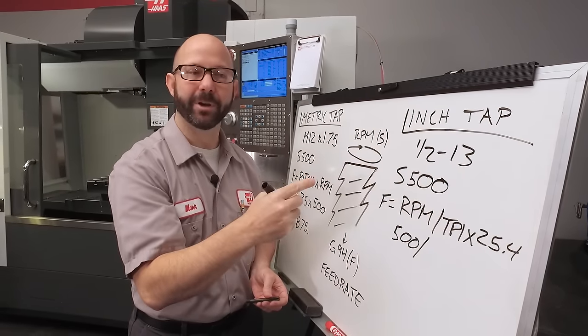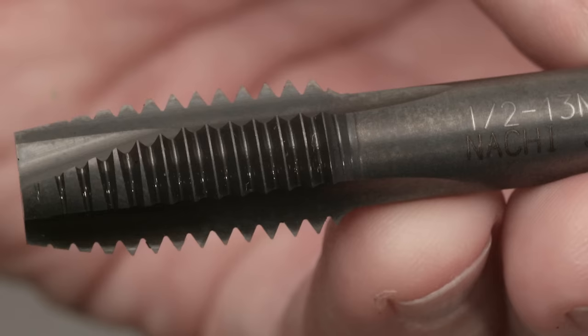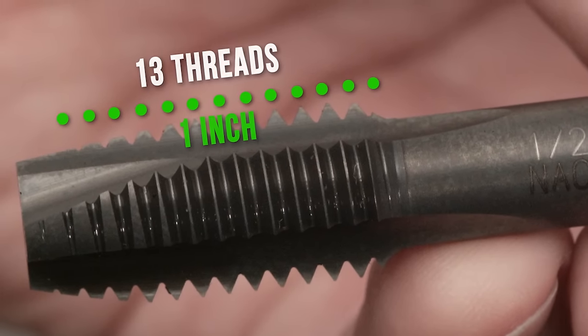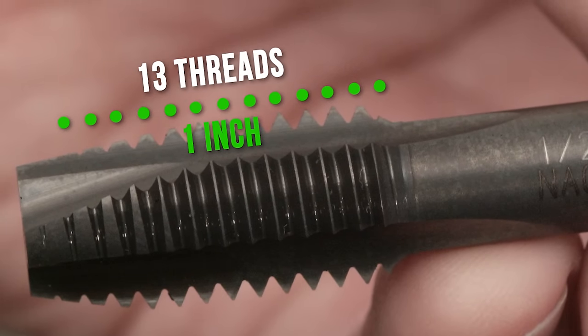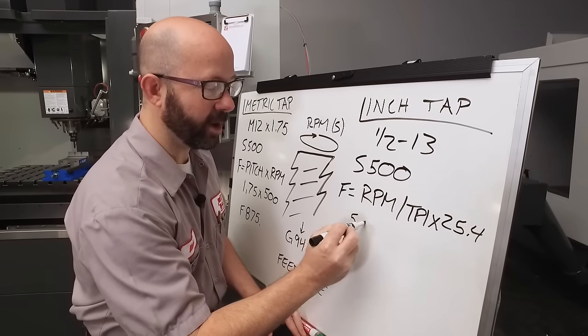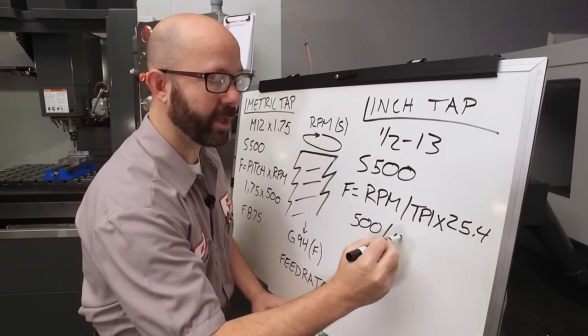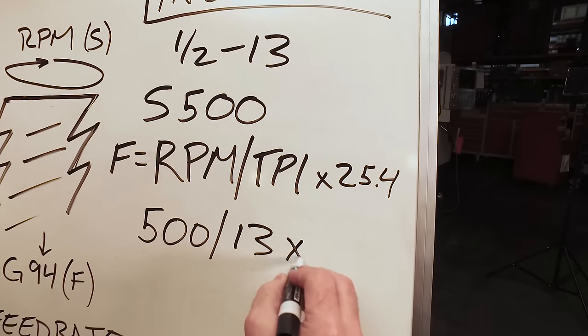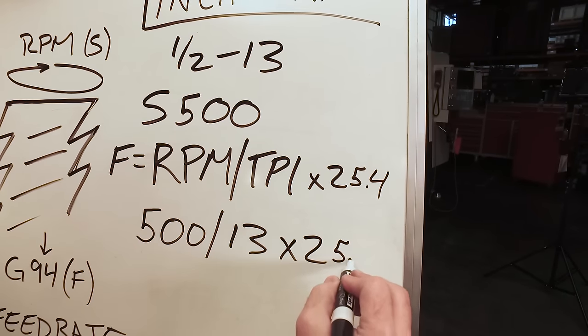1.5 inch is the basic diameter, and 13 is the number of threads per inch, TPI. So we're going to enter 500 RPM divided by 13 threads per inch times 25.4.